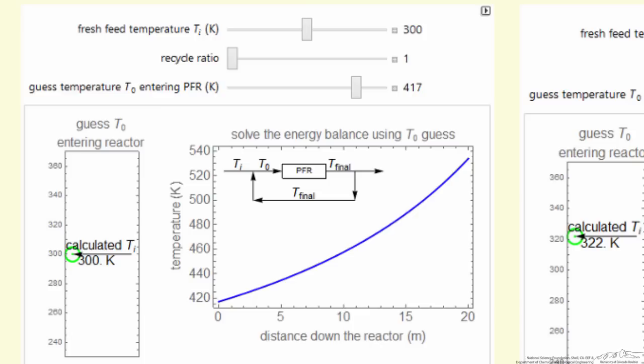So the way we're going to solve it here is we're going to guess T0. You have the ability when you're using a simulation to guess the value of T0, and then that will allow us to solve the differential equations to get T final.